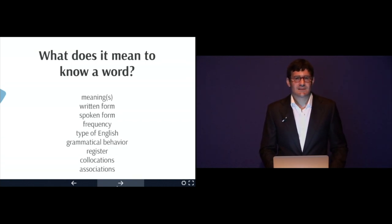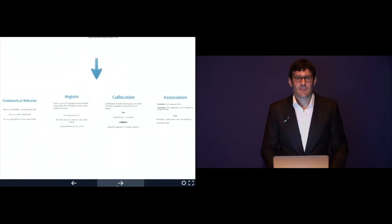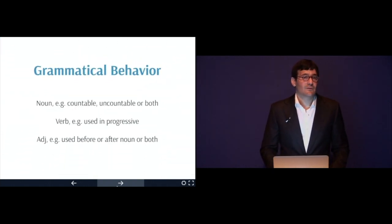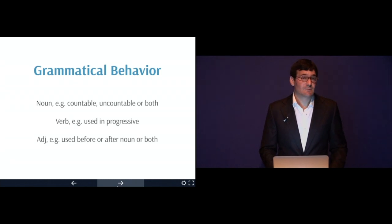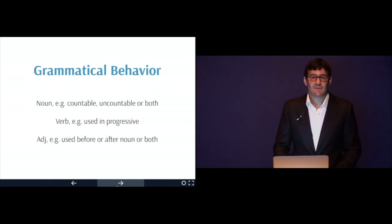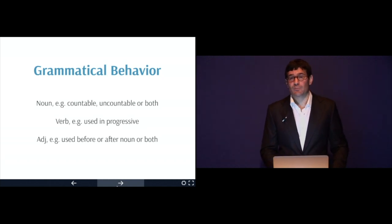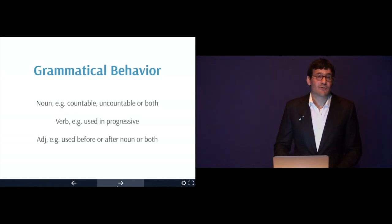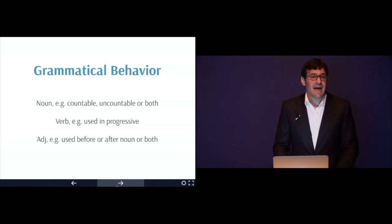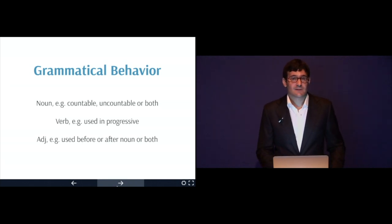So those last four concepts — let's take a look in a little more detail. First, the grammatical behavior. For example, if it's a noun, is it a countable noun, an uncountable noun, or both? This is important because if it's a countable noun, you can use it in the plural. If it's an uncountable noun, you generally wouldn't use it in the plural or put an S on the end of it. Some nouns have features of both. If it's a verb, can it be used in the progressive or not? If it's an adjective, can it be used before the noun, after the noun, or both positions? So those are some examples of the grammatical behavior of a word.